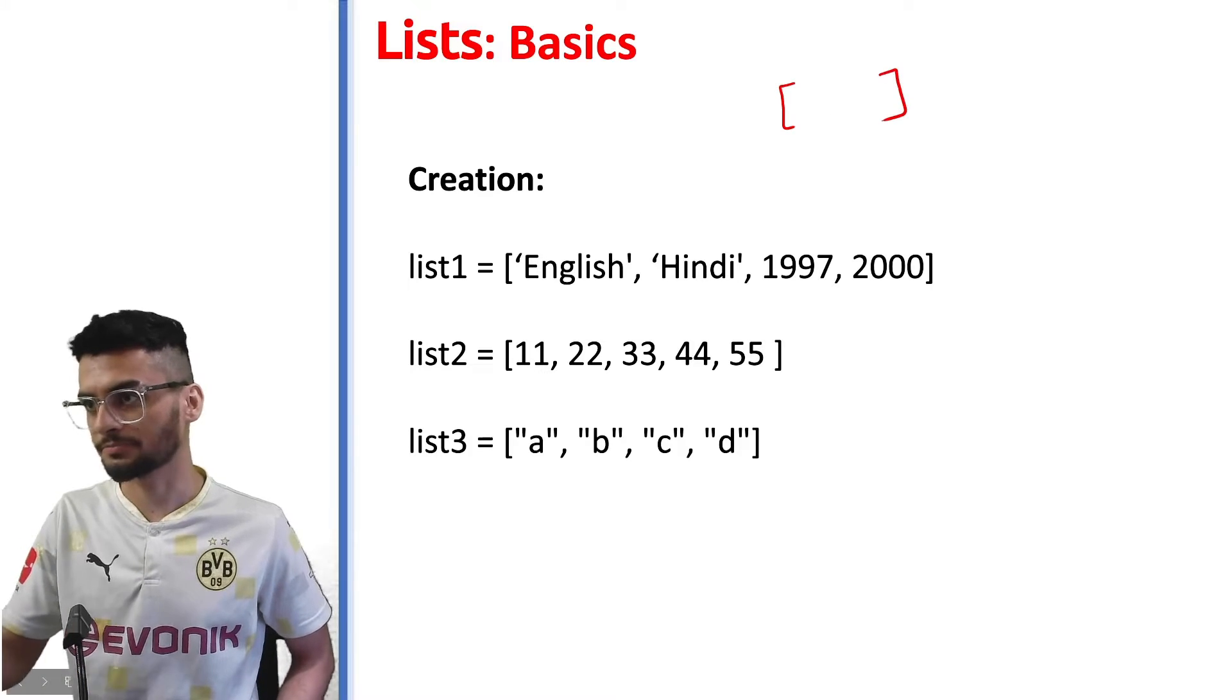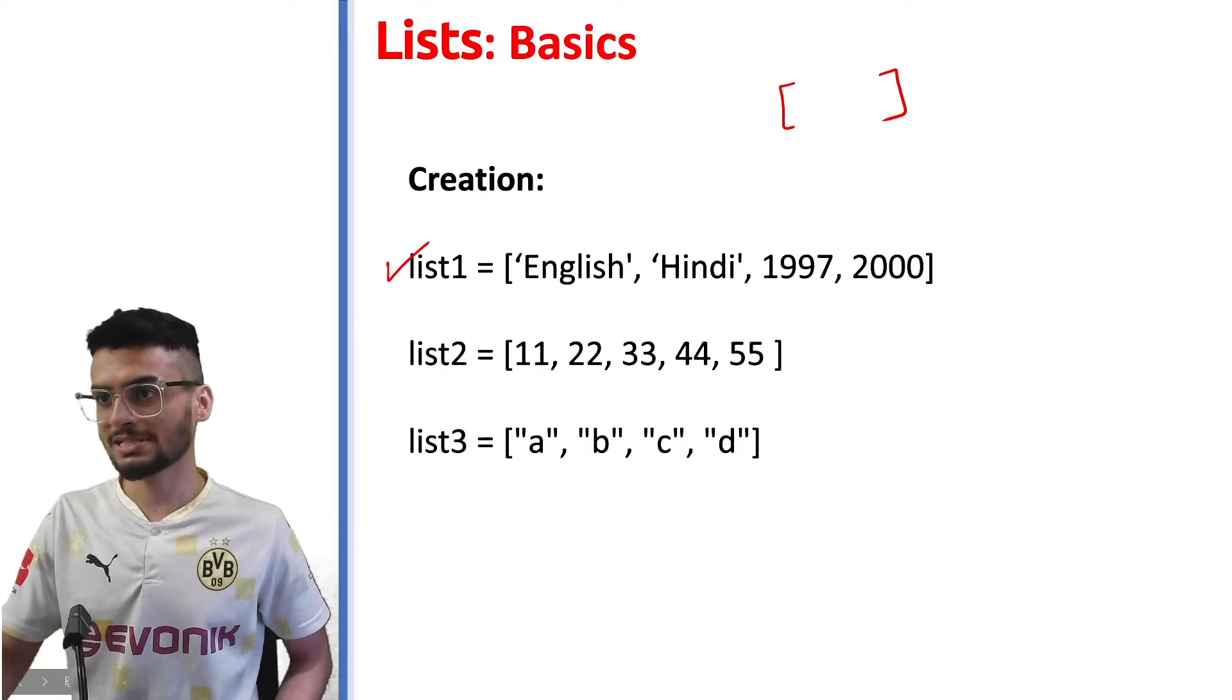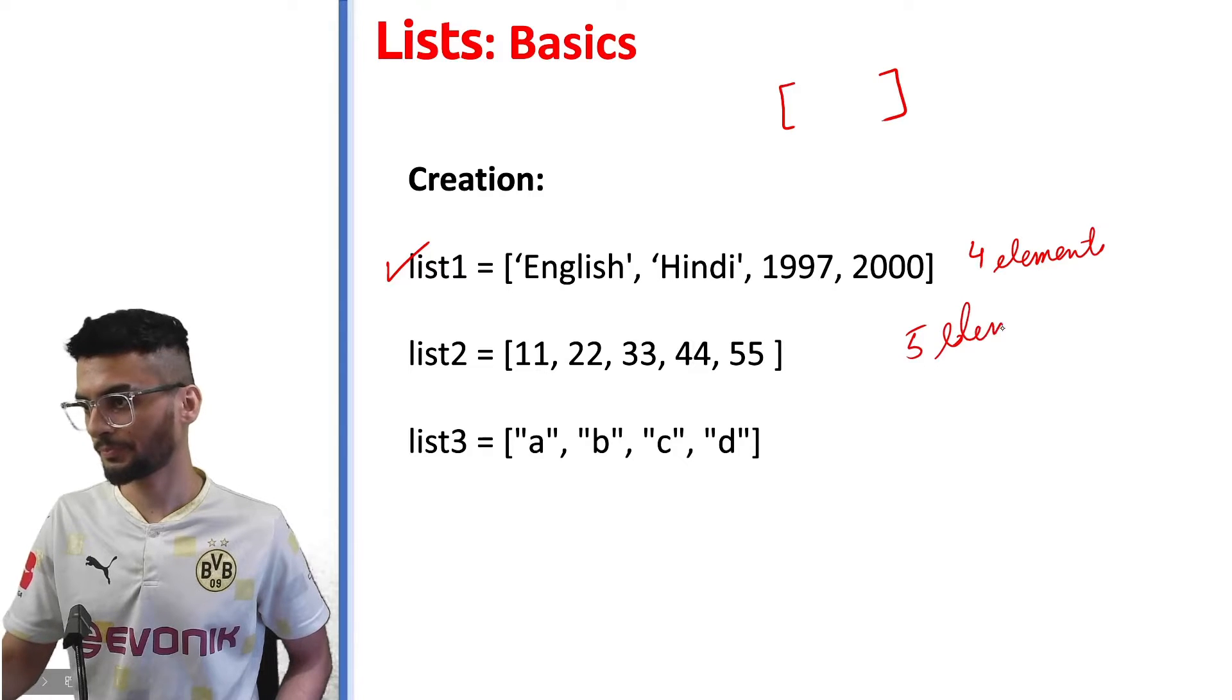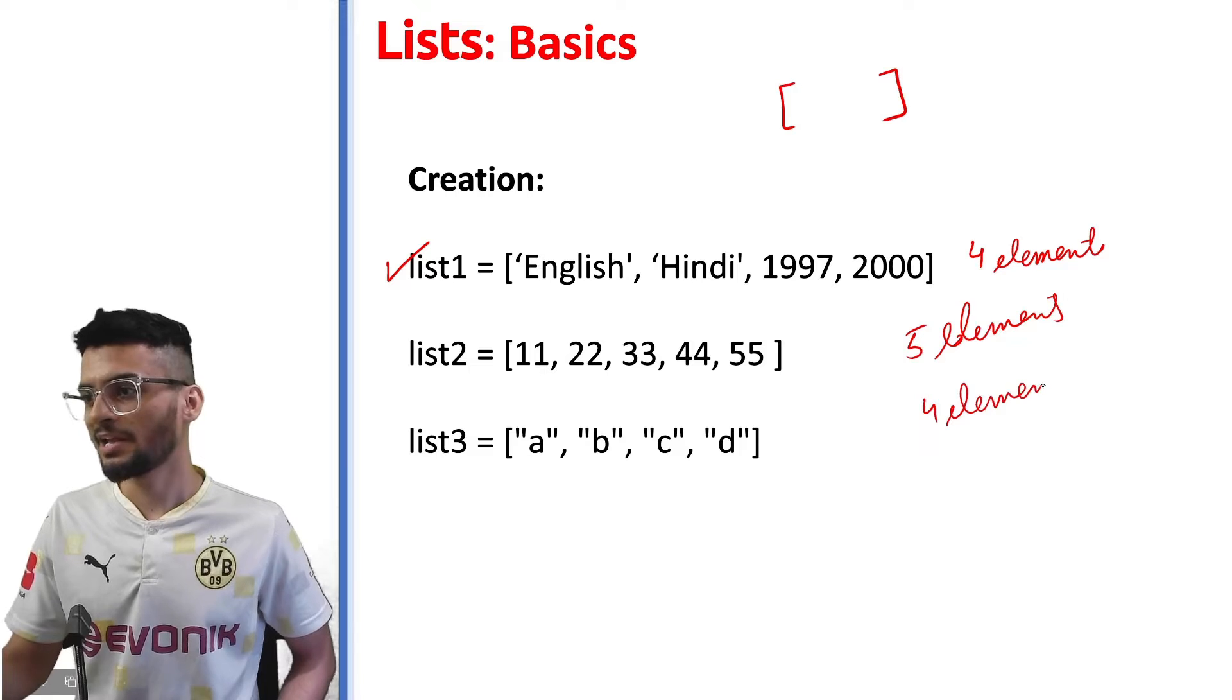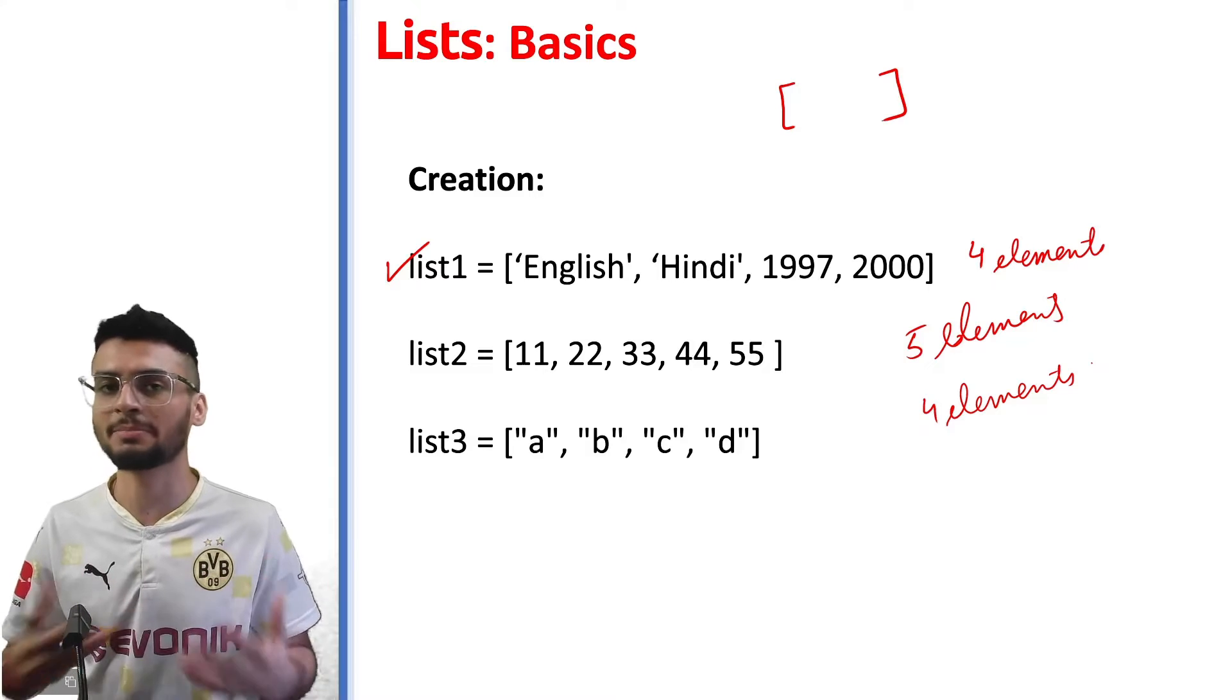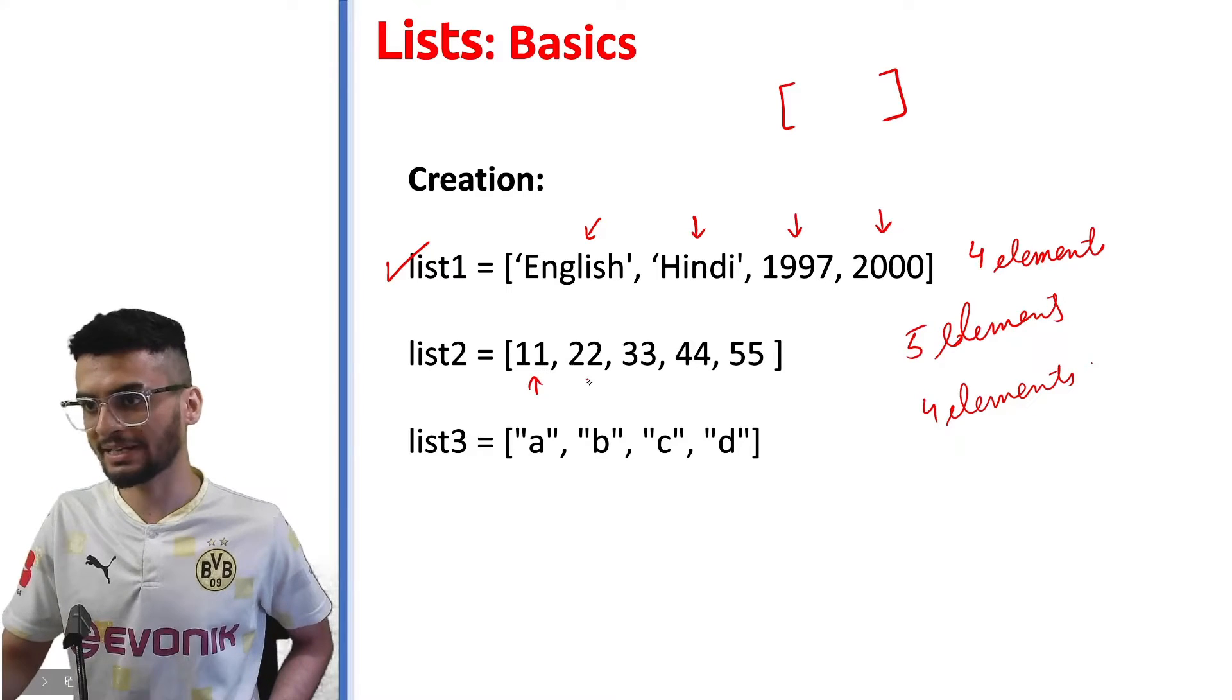If you need to use square brackets, here we have created three lists. First list is of four elements, second list is of five elements, and the third list is also of four elements. If you notice one thing, you don't need to use all the same types of data type in the list. It can be different. It can be a mixed data type.